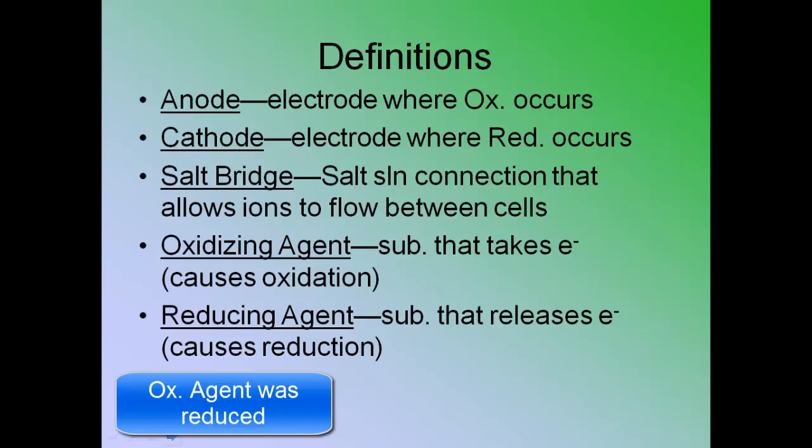It's causing oxidation in something else. It is the agent of oxidation. It is the agent of change. So, the oxidizing agent is the substance that takes in the electrons, being reduced. The reducing agent is the substance that releases the electrons, being oxidized.